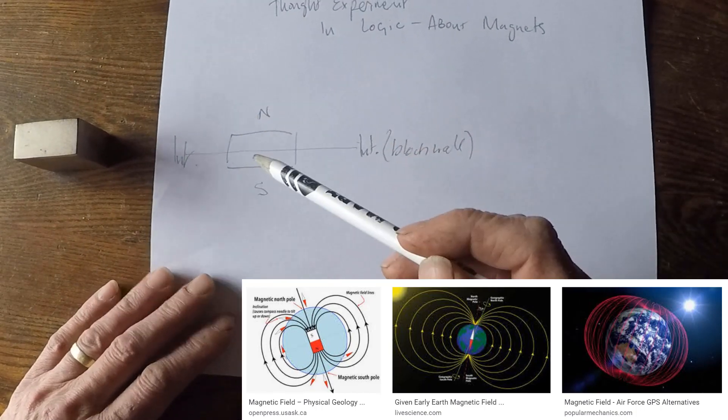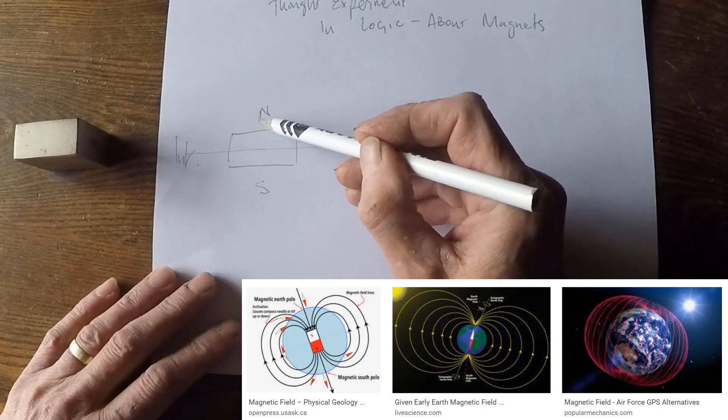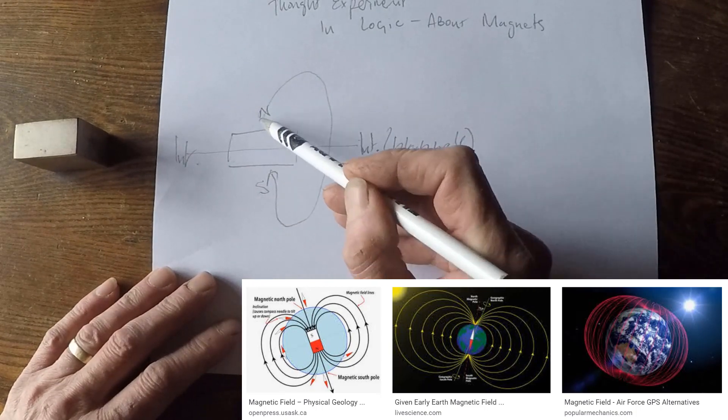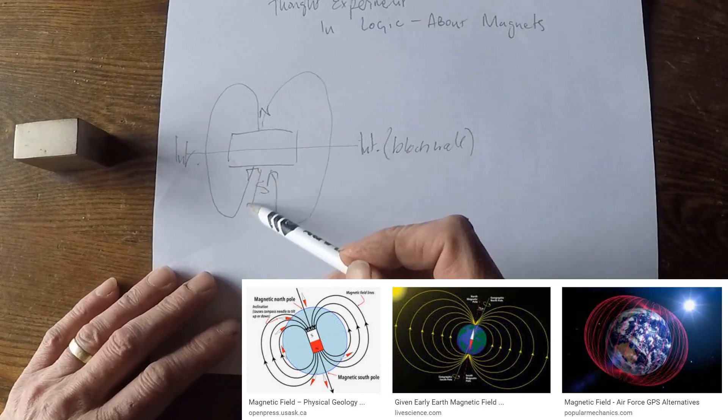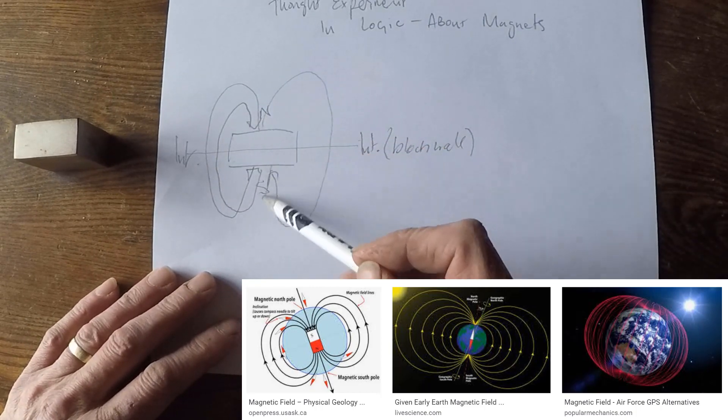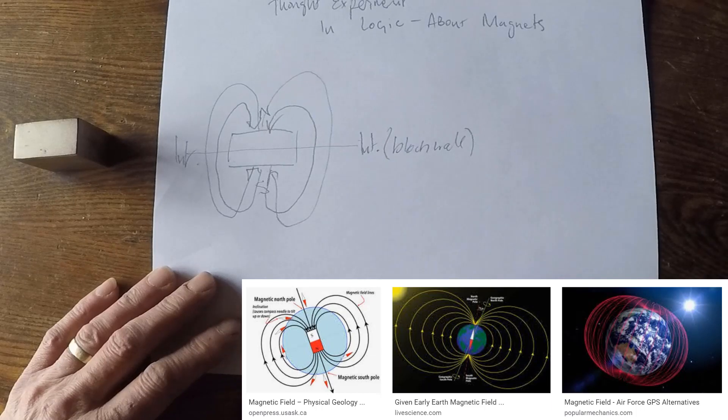This is what mainstream science says happens. The north field comes out and goes into the south field. And the south field comes out and goes into the north field.